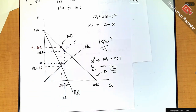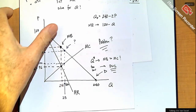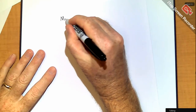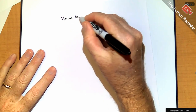Deadweight loss is a measure of the inefficiency due to the monopolist. That's the reason monopoly formation is discouraged — not just because the price is high. The price being high doesn't bother economists by itself; it's that the price is way above marginal cost.